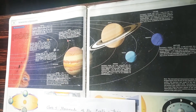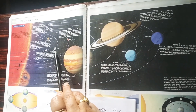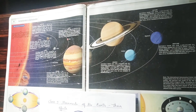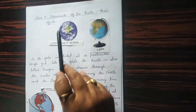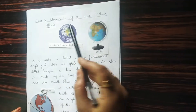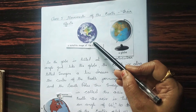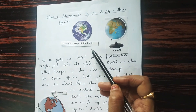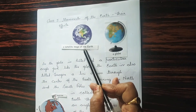Earth is also called a blue planet because three-fourths of the Earth is covered with water and one-fourth is covered by land. Let us learn the movements of this Earth. The topic is Movements of the Earth, Their Effects. This satellite image shows the shape of the Earth, which is spherical.